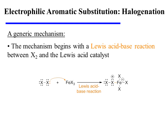The mechanism begins with a Lewis acid-base reaction between X2 and the Lewis acid catalyst. A lone pair of electrons on one of the halogens attacks the iron, forming the Lewis acid-base complex.